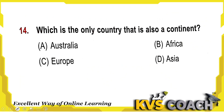Next: which is the only country that is also a continent? The country which is also a continent is Australia. That is the right answer.